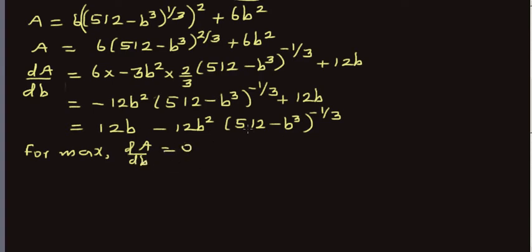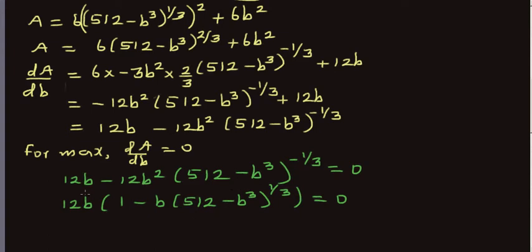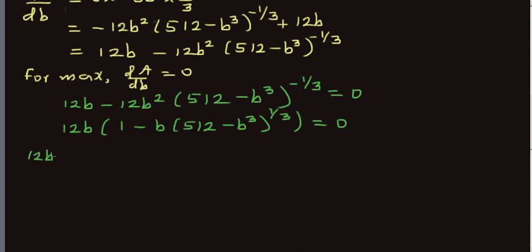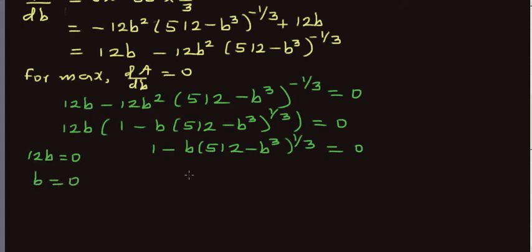You can pause the video, set dA/dB equal to zero, and solve for B. Factoring out 12B, we get two cases: 12B = 0, giving B = 0, or 1 − B / (512 − B³)^(1/3) = 0, which gives (512 − B³)^(1/3) = B.